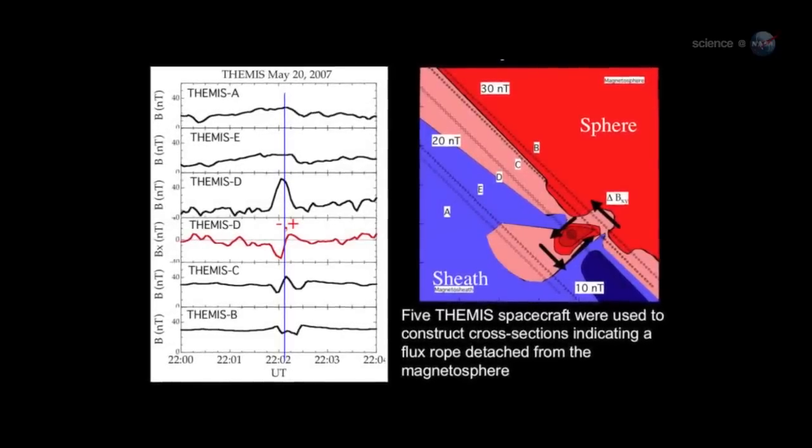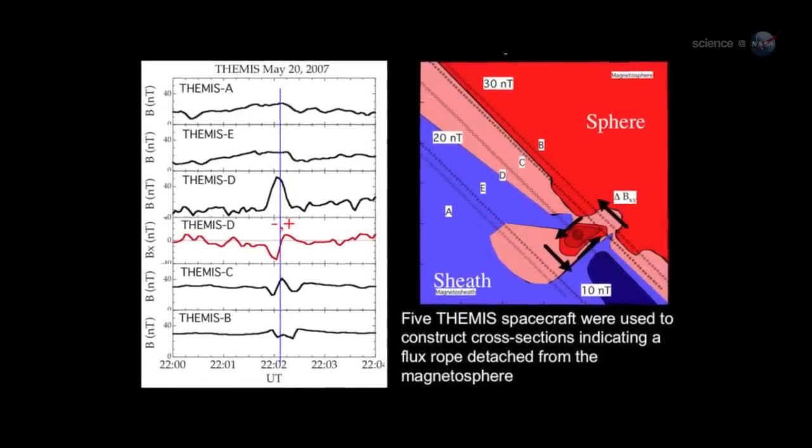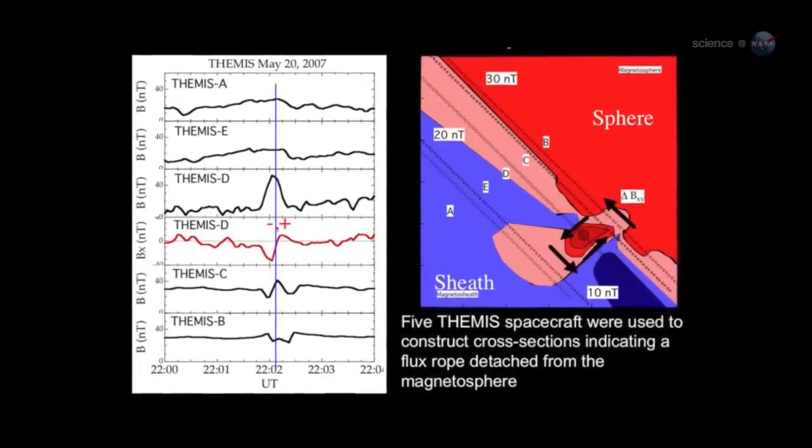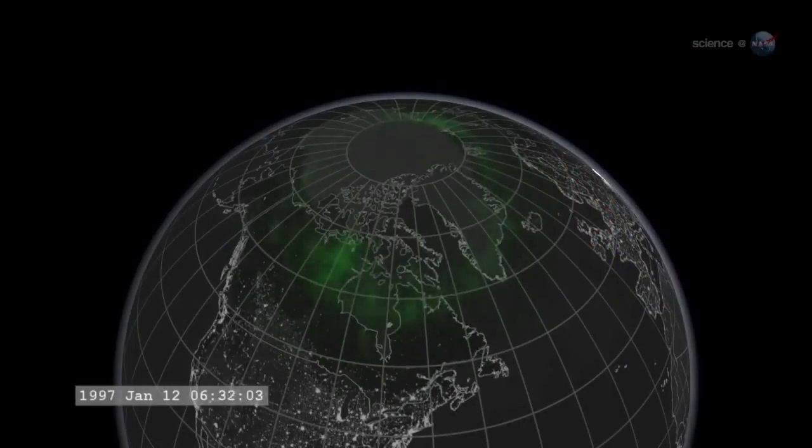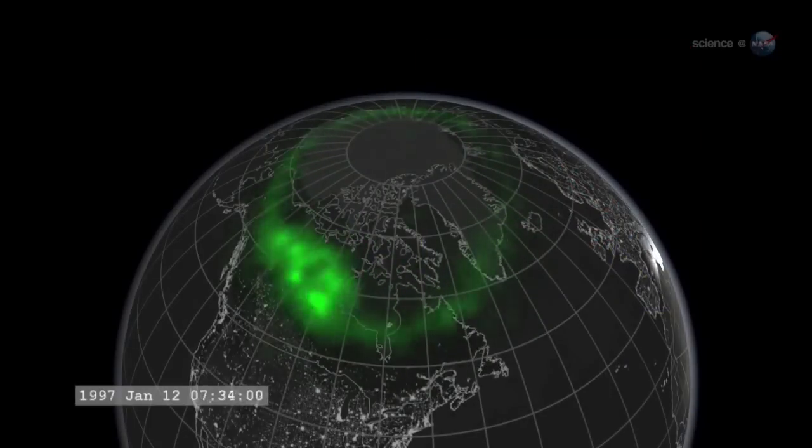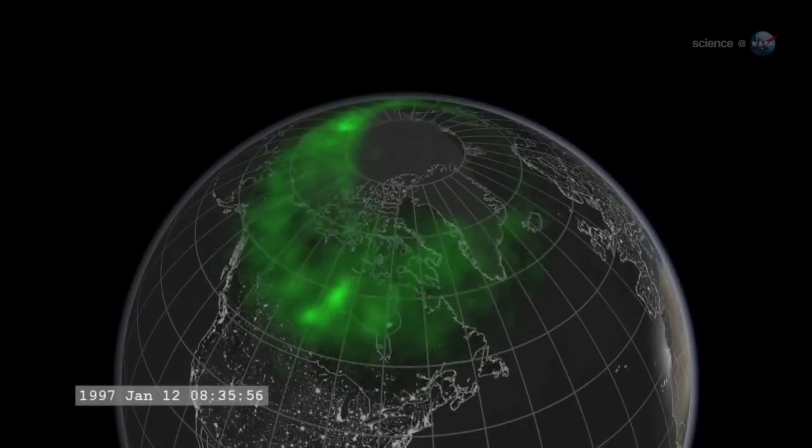Most portals are small and short-lived. Others are yawning, vast, and sustained. Energetic particles can flow through the openings, heating Earth's upper atmosphere, sparking geomagnetic storms, and igniting bright polar auroras.